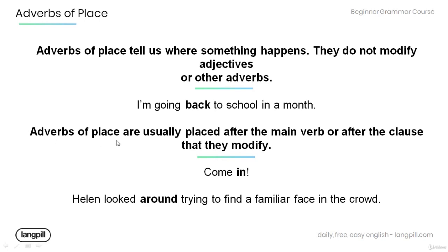Remember that adverbs of place are usually placed after the main verb or after the clause that they modify. Have a look at the examples below. 'Come in' — the adverb 'in' modifies the main verb 'come.' And in the sentence 'Helen looked around trying to find a familiar face in the crowd,' the adverb of place 'around' modifies the main verb 'looked' — where Helen looked.